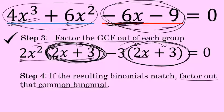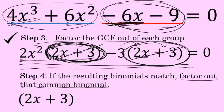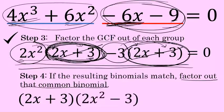The common binomial is 2x plus 3, so I'm going to factor that out to the front of the entire left side of the equation. Factoring out the 2x plus 3 leaves me with 2x squared minus 3. So the equation becomes 2x plus 3 times 2x squared minus 3 equals 0. Done with step 4.